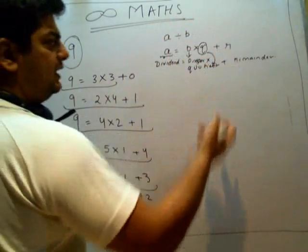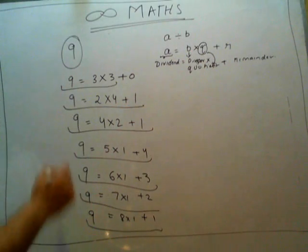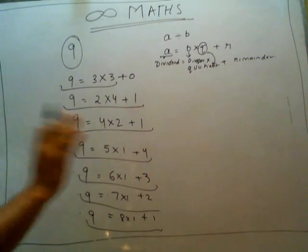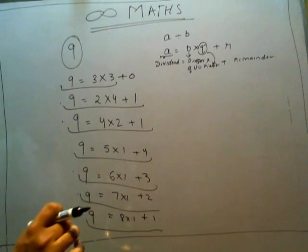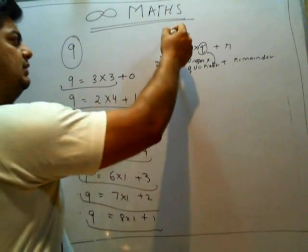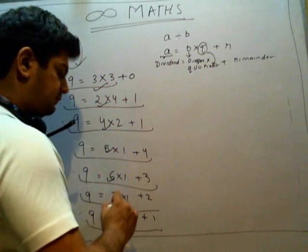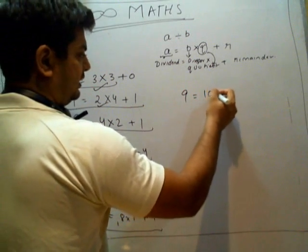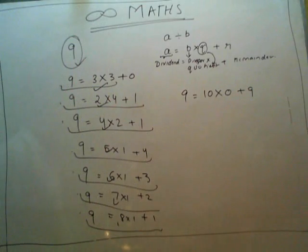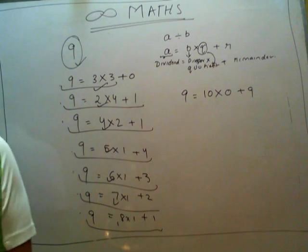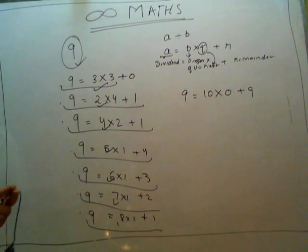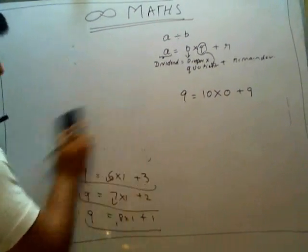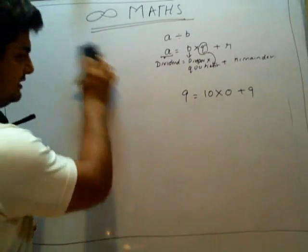Q stands for quotient. A can be any number, B can be any number. The main thing is you can see any number this way. You can even see that 9 equals 10×0 + 9. You have to be very comfortable understanding this logic — what does A divided by B mean? A divided by B means nothing but a simple thing: any number can be divided by any number and it can be represented accordingly.